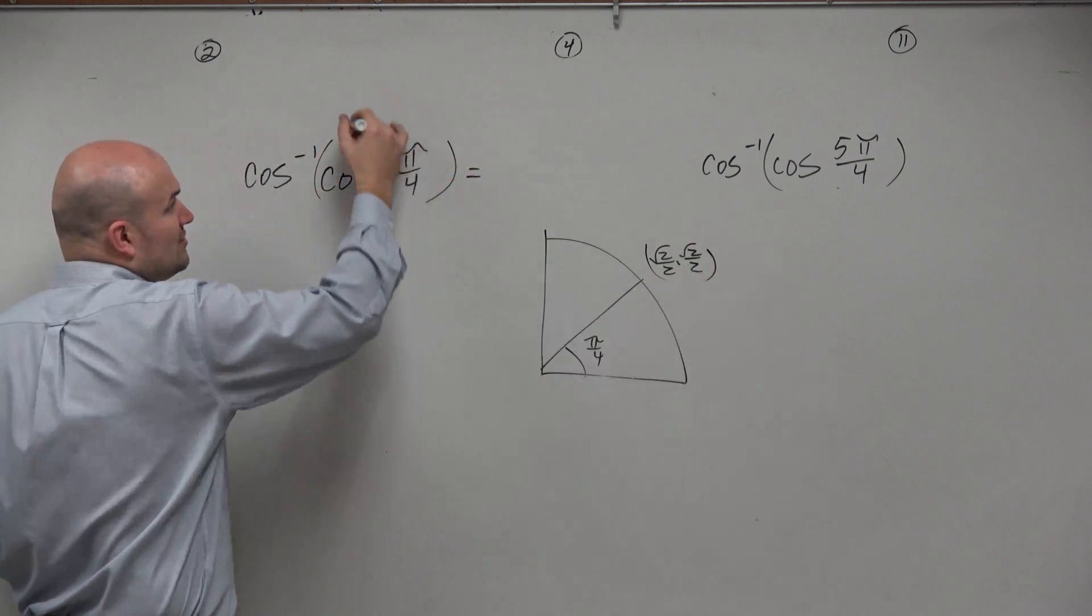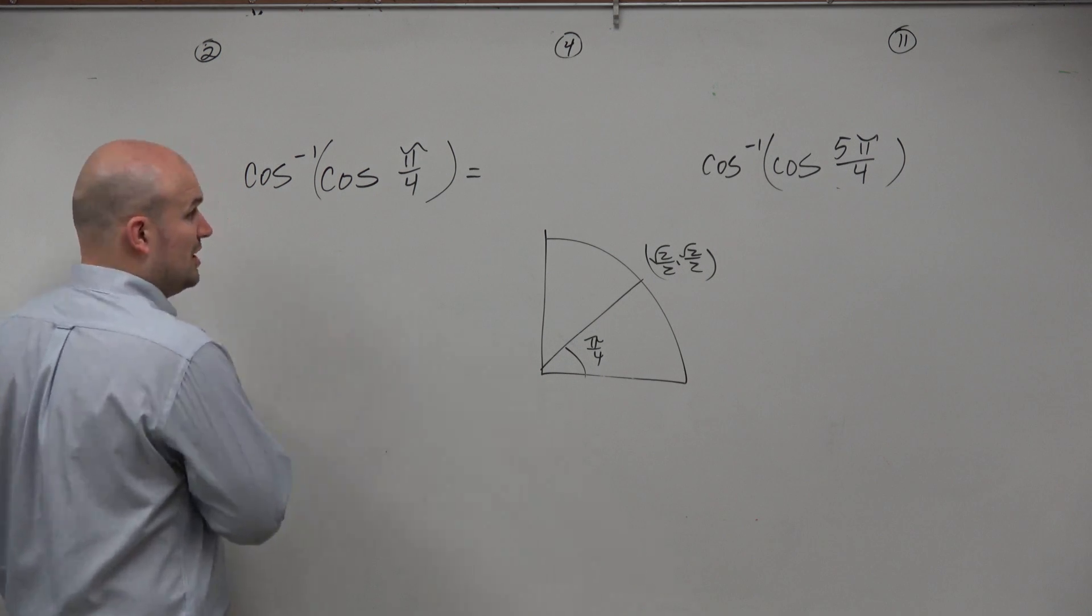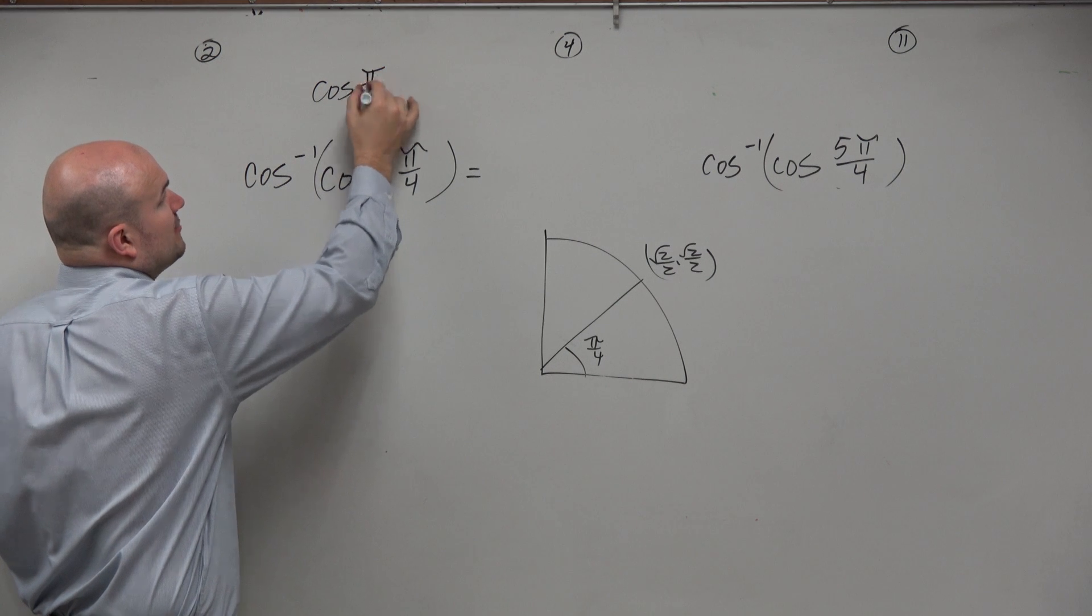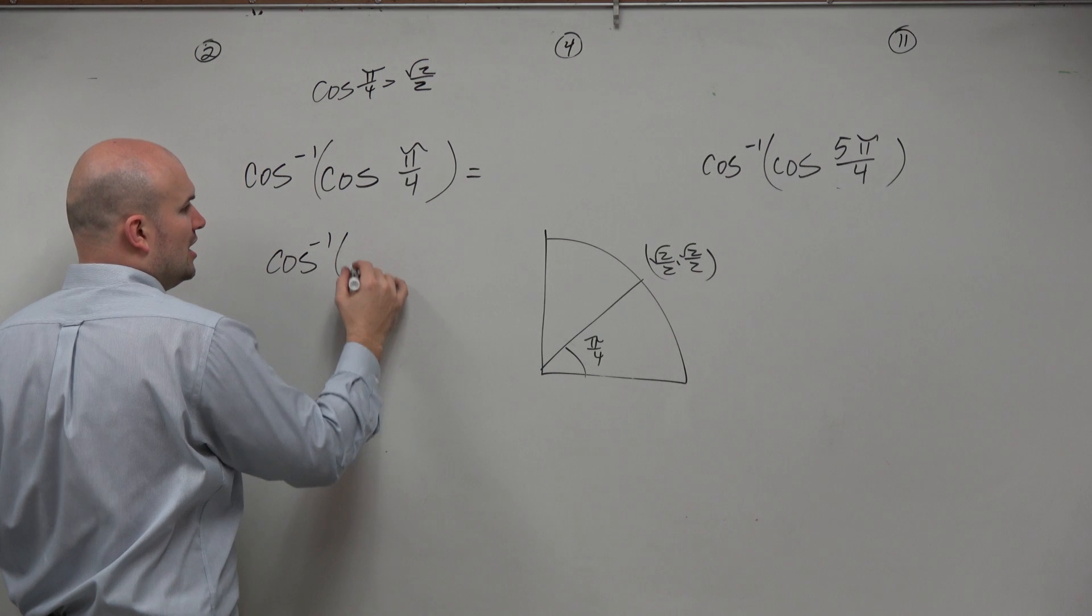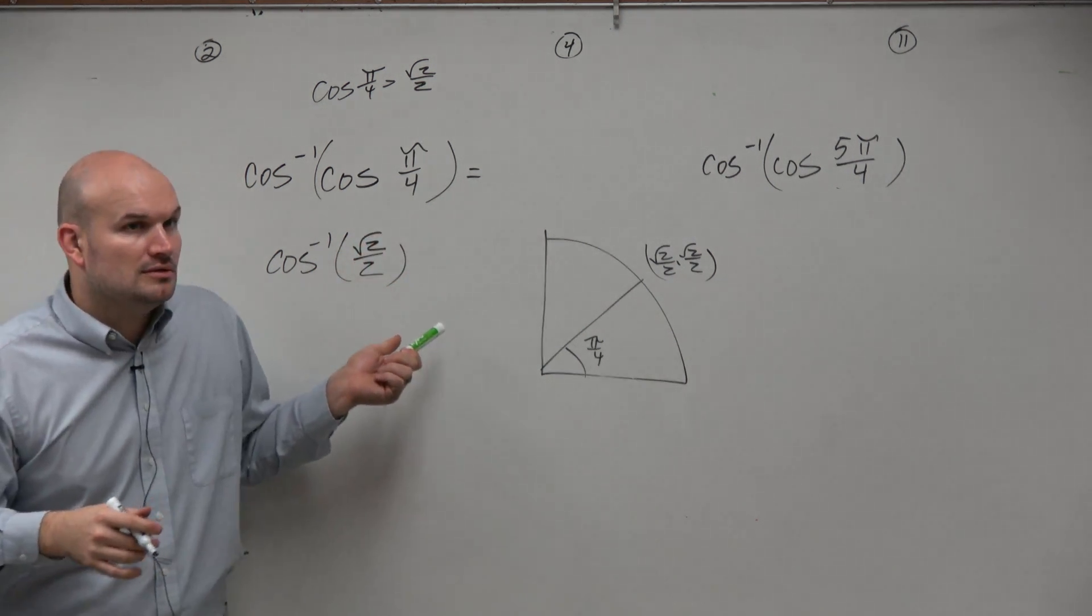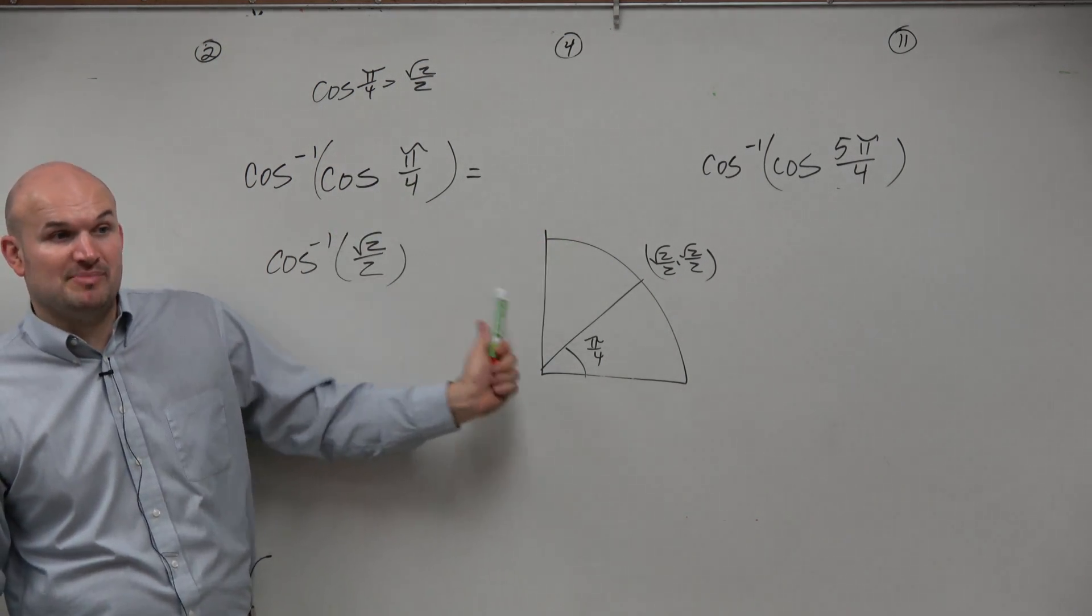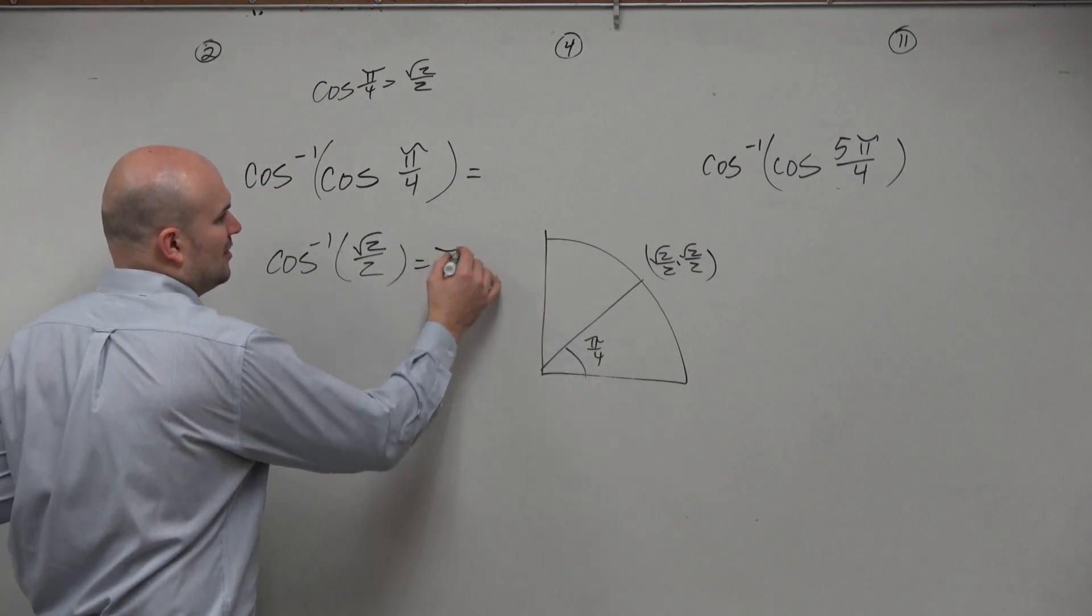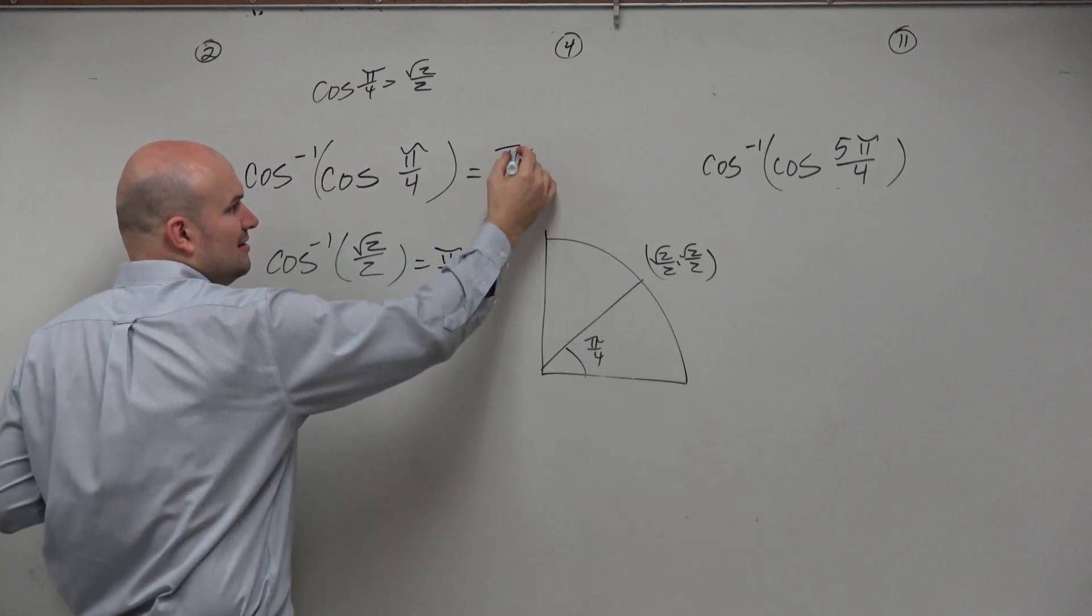So therefore, I know that cosine of pi over 4 is square root of 2 over 2. Let me just rewrite that up top. Cosine of pi over 4 is equal to square root of 2 over 2. So now I'm dealing with cosine inverse of square root of 2 over 2. So then what angle of theta gives me square root of 2 over 2 in the first and the second quadrant based on the constraints? Pi over 4. So the inverse of cosine of pi over 4 is just pi over 4.